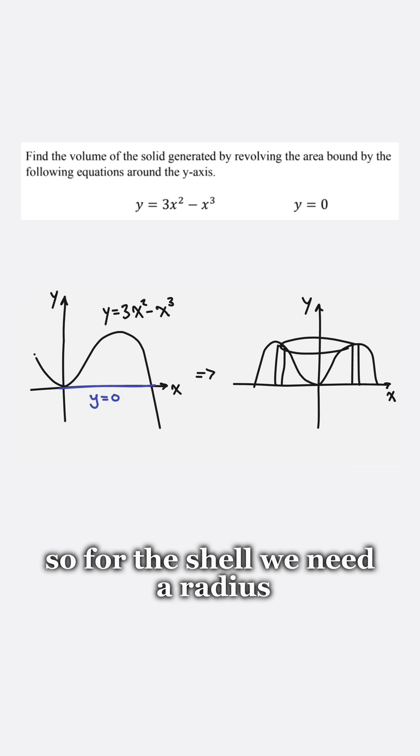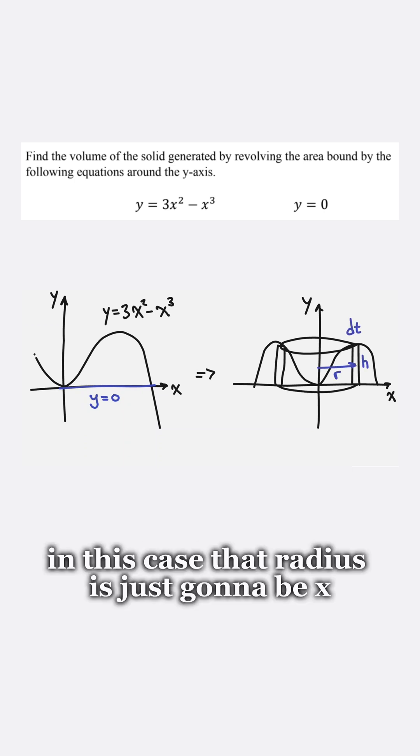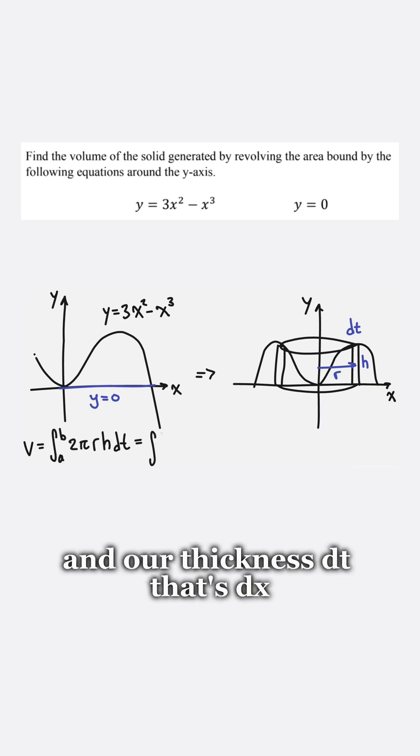So for the shell we need a radius, we need a height, and we need a thickness dt. In this case that radius is just going to be x, the height is going to be y, and our thickness dt, that's dx.